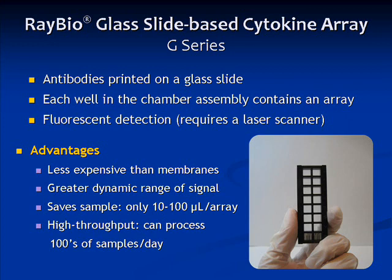The glass slide arrays, or the G-Series, contain the same antibodies as the C-Series, or membrane-based arrays. The difference is the antibodies are printed on a glass slide fitted with a chamber assembly. Each well in the chamber assembly contains an array, and a typical slide will have either 4 or 8 arrays printed. The glass slide arrays also feature fluorescent detection, which requires the use of a gene microarray scanner.